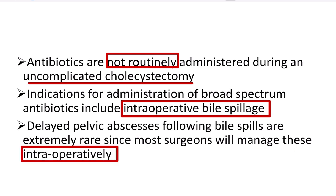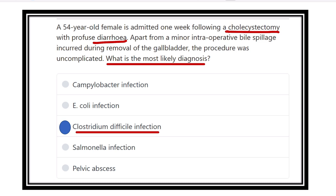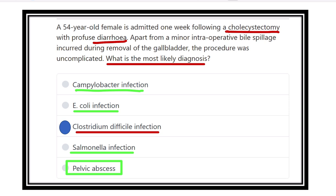Bile spillage alone is not sufficient to cause a pelvic abscess, so pelvic abscess usually does not occur here. The most likely diagnosis for acute watery diarrhea after the operation is Clostridium difficile infection. Other options such as Campylobacter infection are not applicable here. E. coli can also cause acute watery diarrhea but not in this postoperative context. Salmonella infection is also ruled out.